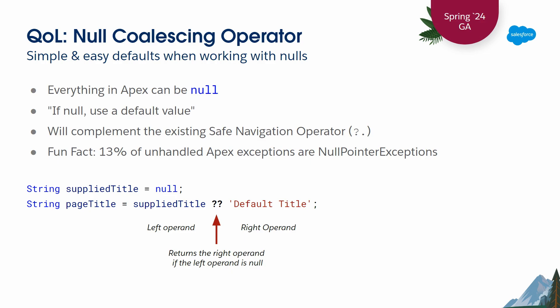The second half of safe navigation that we didn't finish until now: the null coalescing operator. It is now GA in Spring 24. It is a simple way of applying a default when working with nulls. I read it as 'if null, use default value on right.' Using the double question mark operator, if the left operand evaluates to null, the right operand is substituted. Given that 13% of all unhandled Apex exceptions in production are null pointer exceptions, we figured you could use another tool to make dealing with nulls just a little bit easier.